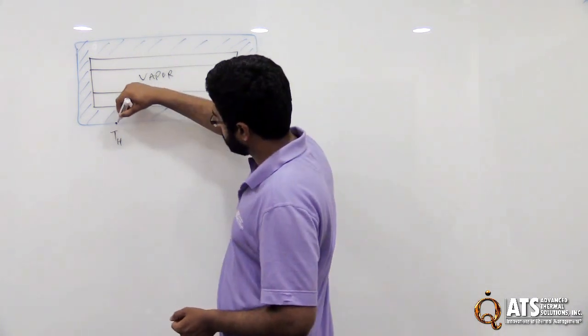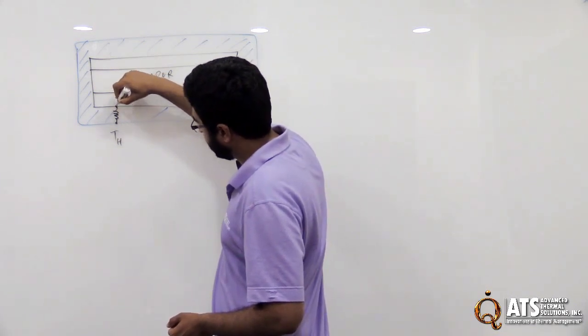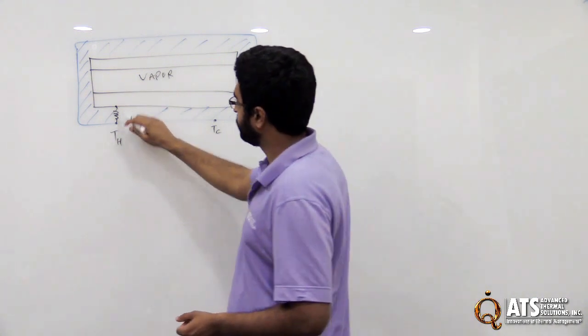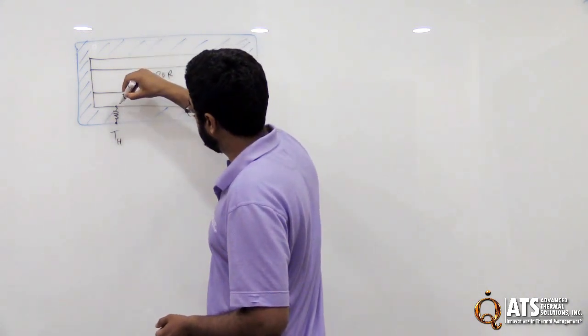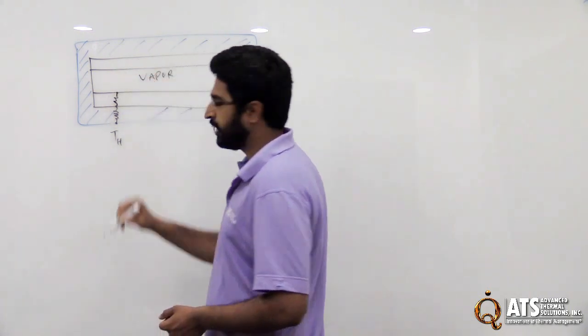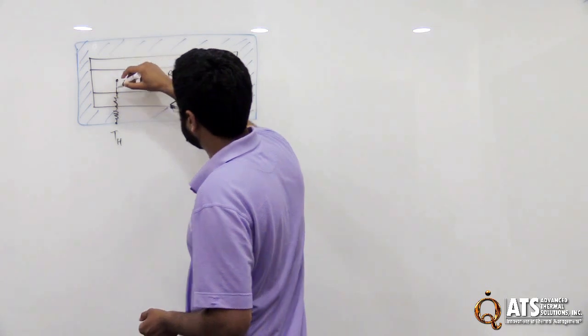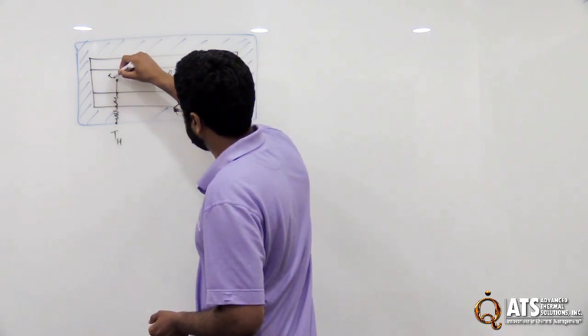So immediately you can see that there's a resistance of the case. So whatever this copper casing, you're going to have some resistance here. And then you're going to have radial resistance going this way as well. Then this goes into this temperature of the vapor space. So let's say TV. And axial resistance of that.